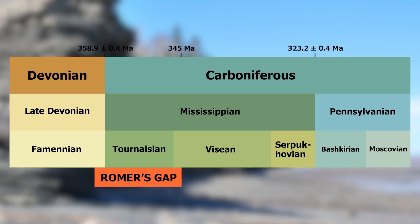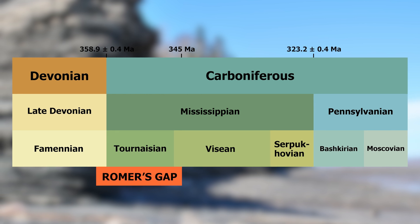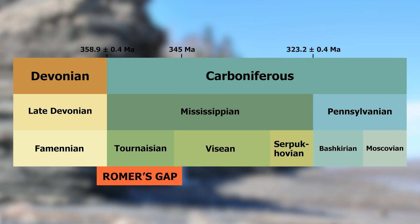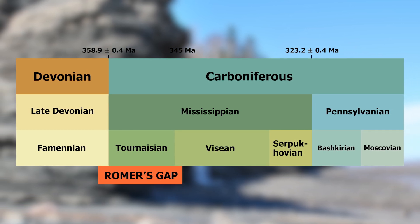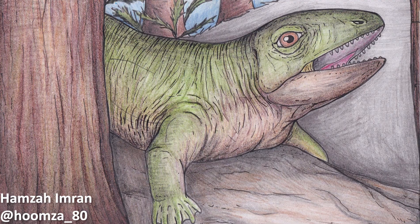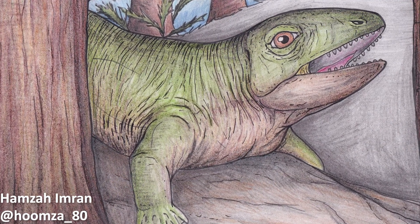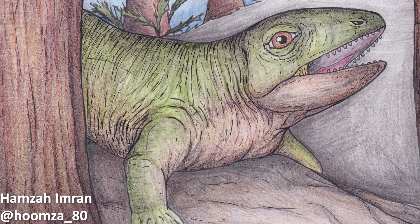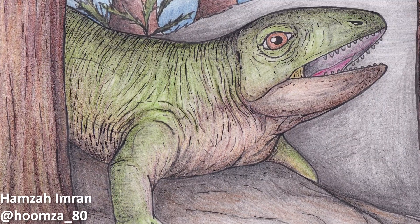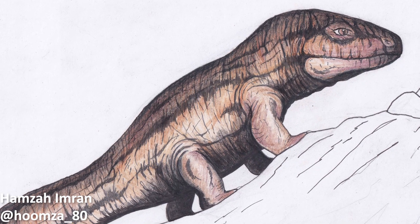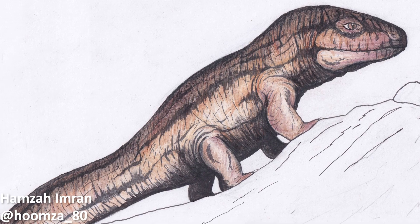Studies such as these continue to help refine the known records of the time represented by Roma's Gap, showing that early on in the Tournaisian, tetrapods seem to have still been primarily aquatic, whilst slightly later on in this stage, at times represented by the Scottish localities, there was a diverse assemblage of both aquatic and terrestrial tetrapods. Then by the next stage of the Carboniferous, the tetrapods had truly conquered the land.